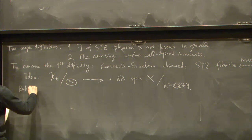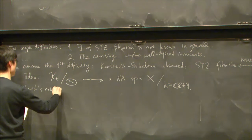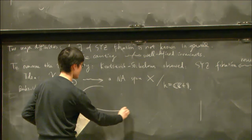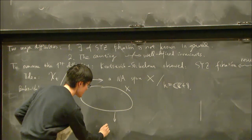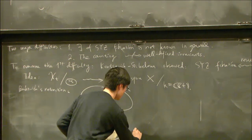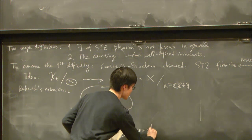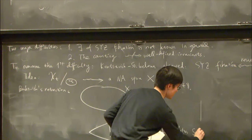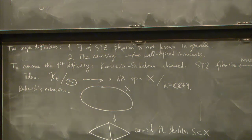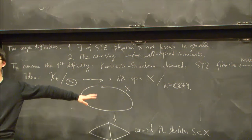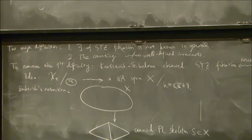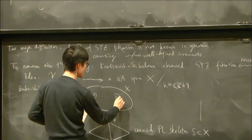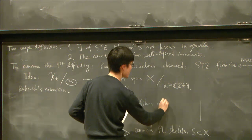Berkovich's retraction is a retraction that Berkovich constructed from X to a canonical piecewise linear skeleton canonically embedded in X. Moreover, one can prove that the fibers of this retraction are an analog of tori in the non-Archimedean world. The fibers are affinoid tori.